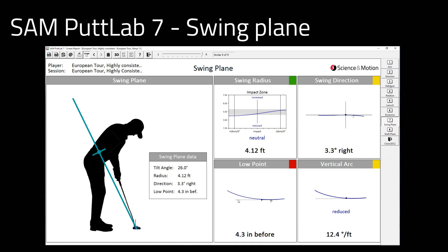The low point of the swing plane is also the lowest point of your swing and is normally just before impact, which allows you to have a positive angle of attack through impact. In this case, the low point is 4.3 inches before impact.